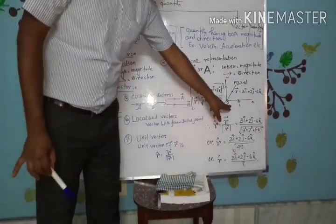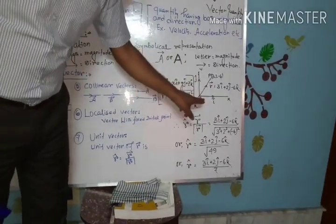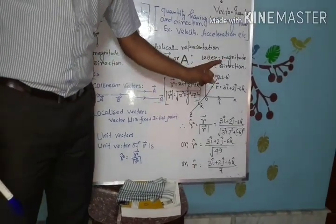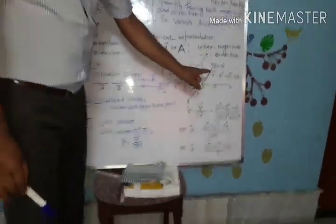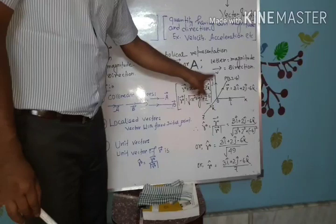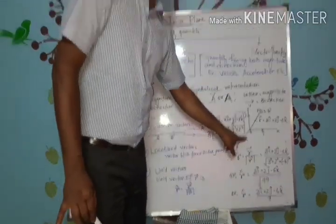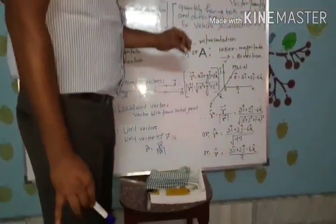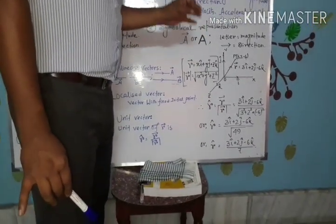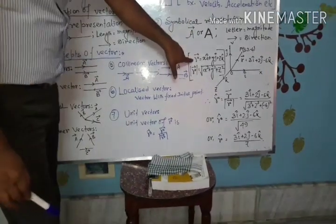See the diagram — this is a 3-dimensional coordinate system with X-axis, Y-axis, and Z-axis. Remember: along the X-axis, the unit vector is always i-cap; along the Y-axis, the unit vector is j-cap; and along the Z-axis, the unit vector is k-cap. So if there is a coordinate point (X, Y, Z), we can represent it in vector form.